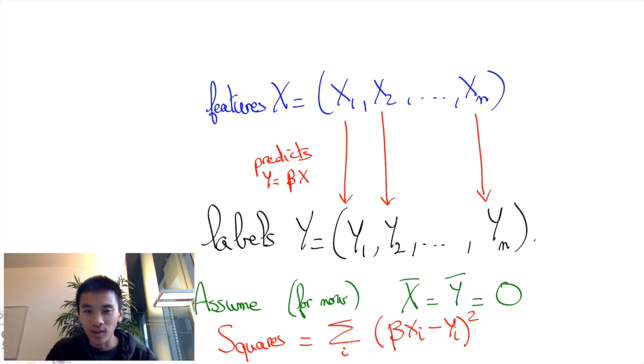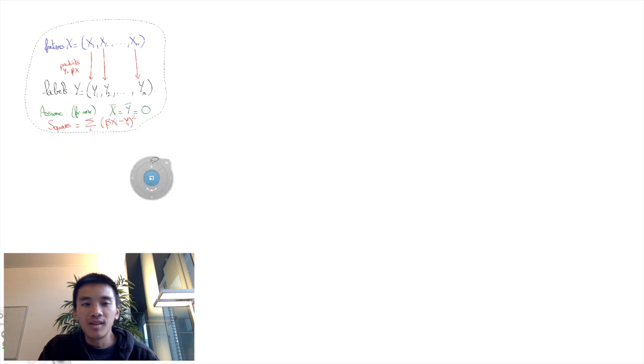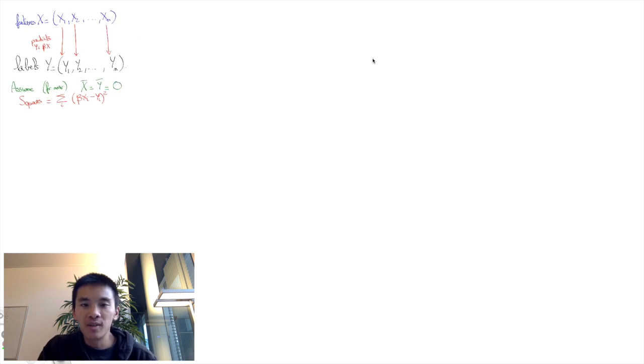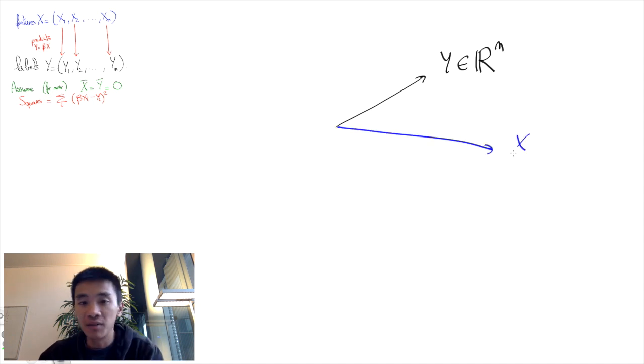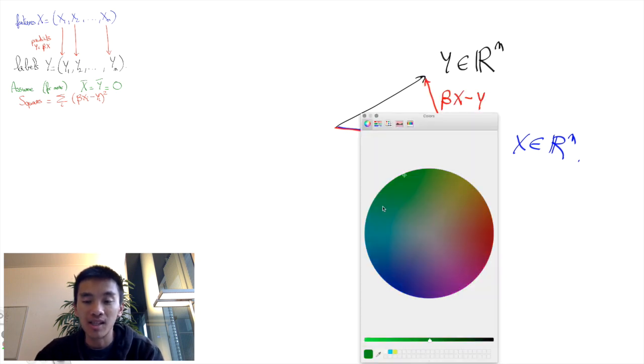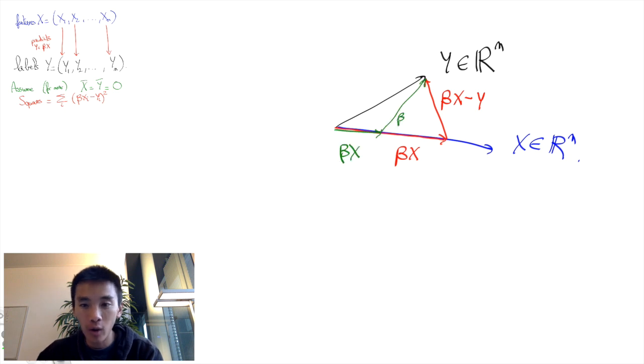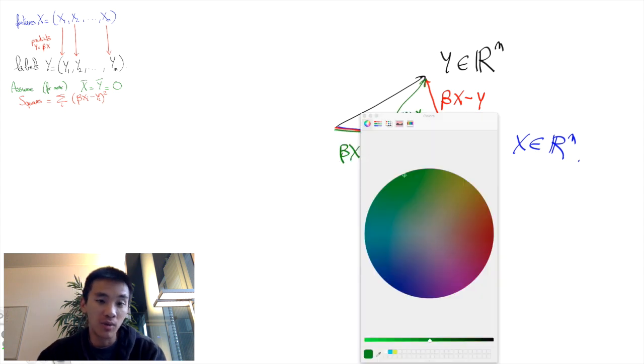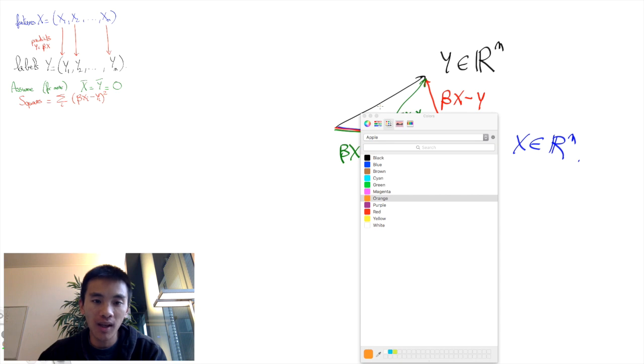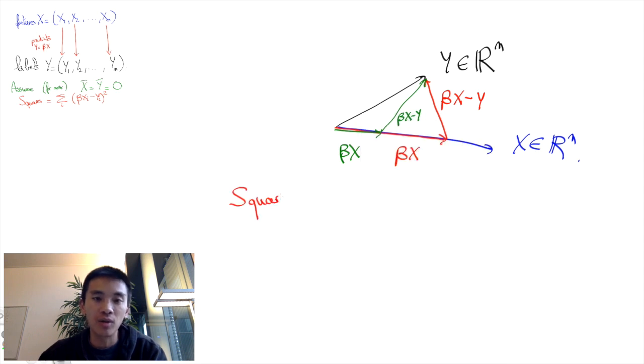What's going to be very useful, at least to get a geometrical intuition, is to interpret this problem as a distance minimization in Rn. Indeed, what we're trying to do is approximate the vector Y with the vector beta*X. In fact, the sum of squares is exactly the square of the distance between the n-dimensional vector Y and the n-dimensional vector beta*X.